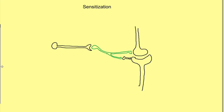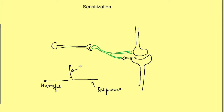The next type of non-associative learning is sensitization. In sensitization, if a harmful or noxious stimulus is given, it elicits a response. The key difference from habituation is that here we are talking about a harmful stimulus. Then, for some time after the harmful stimulus, even a harmless neutral stimulus will also elicit a strong response. For example, if there is a very loud sound and you get startled, even a small sound for some time will elicit a response from you.